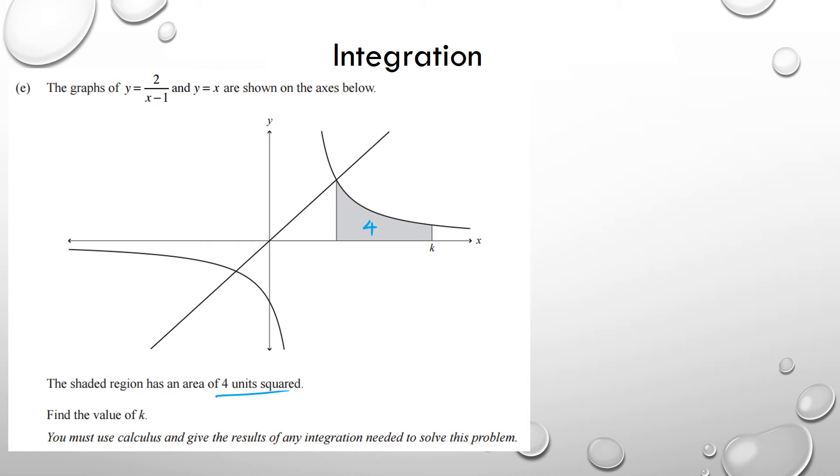Now, if I was to write this as an equation, I've got k and obviously there's a value of x here. If I was to write this as an equation, it's going to look like this. I've got from k to x, and the equation I'm looking at is the hyperbola, which is 2 over x minus 1 dx equals 4.